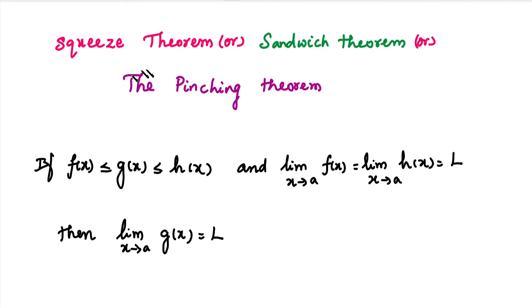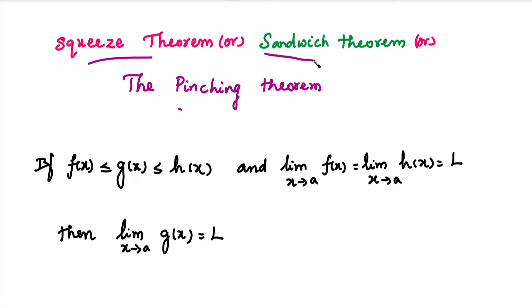Hi students. Today we will learn how to find the limit value of a function using the Squeeze Theorem. This theorem is also known as the Sandwich Theorem and the Pinching Theorem. The statement is: if f(x) ≤ g(x) ≤ h(x), and the limit as x tends to a of f(x) equals the limit as x tends to a of h(x) equals L, then the limit as x tends to a of g(x) is also equal to L.